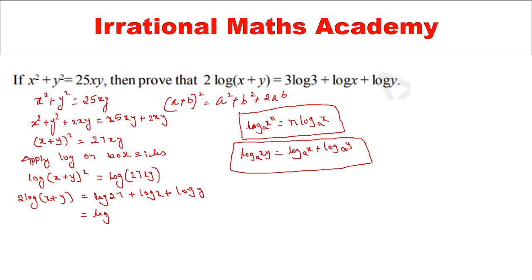Further, 27 I can write it as 3 cube, 3 into 3 into 3. 27 I can write it as 3 cube equal to log x plus log y. So again, log x power n is nothing but n log x. So here 3 log 3 plus log x plus log y. So 2 log(x + y) equal to 3 log 3 plus log x plus log y. This is our required.